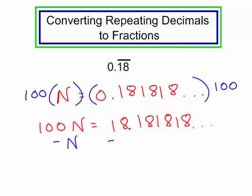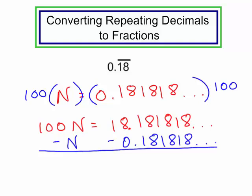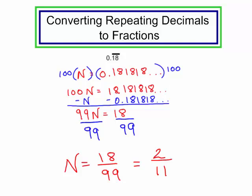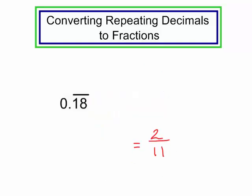On the left side I subtract n; on the right side I also subtract n, and we know n is 0.1818 repeating. 100n minus 1n is 99n. On the right side I get 18. Now let's solve for n — divide both sides by 99. n is equal to 18 over 99, which can reduce, and we get 2 elevenths. So 0.18 with the 1 and the 8 repeating is equal to the fraction 2 elevenths.